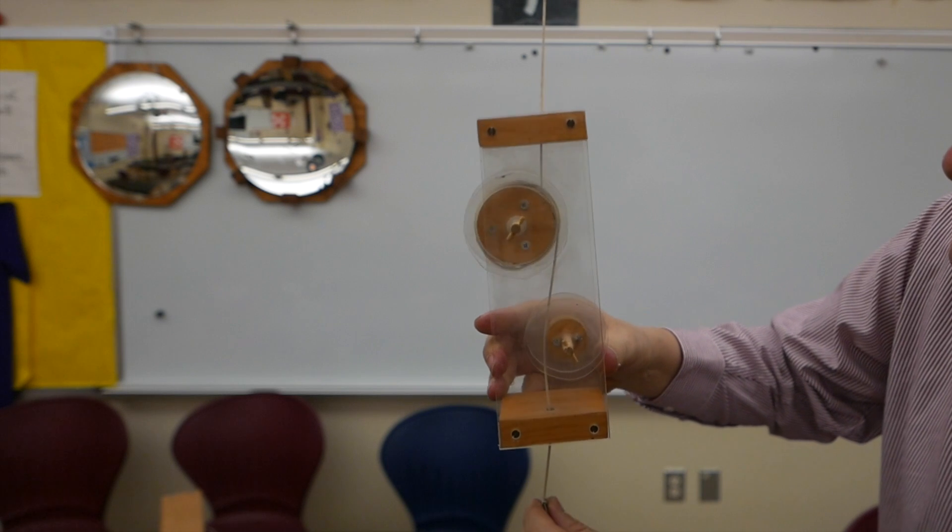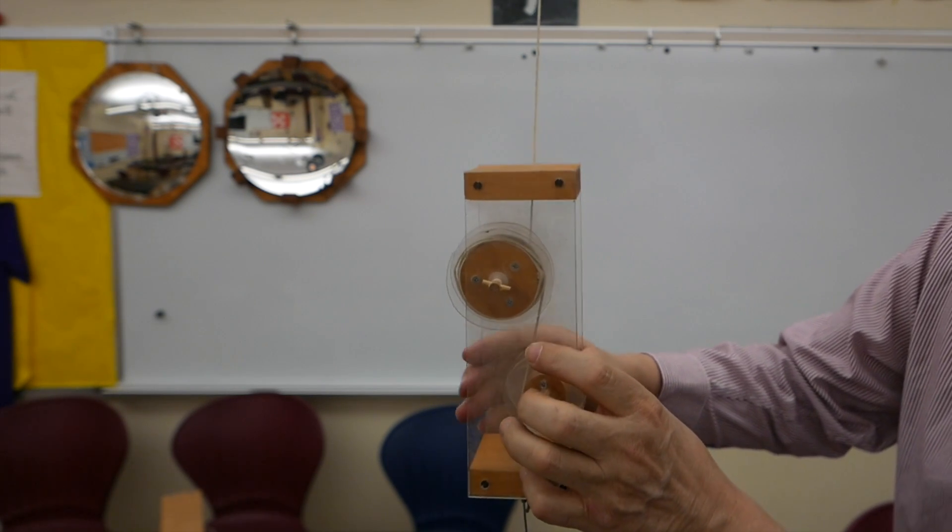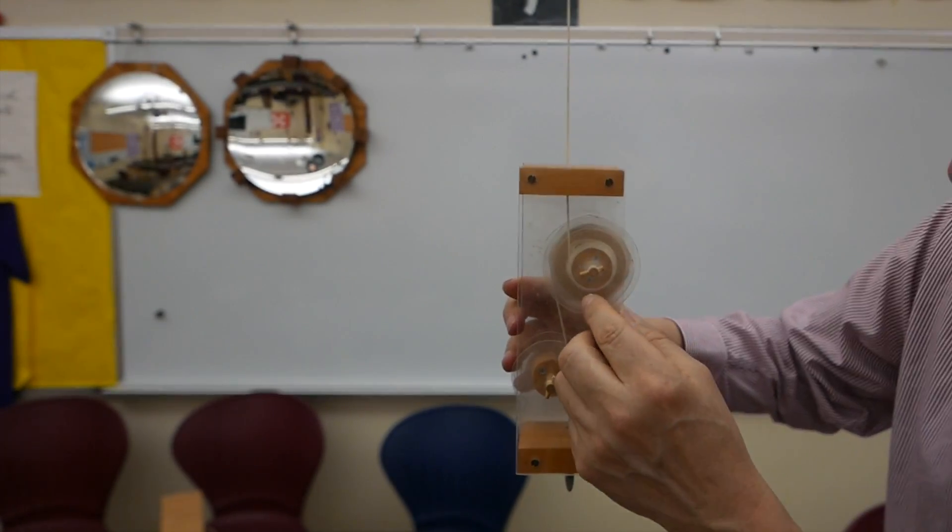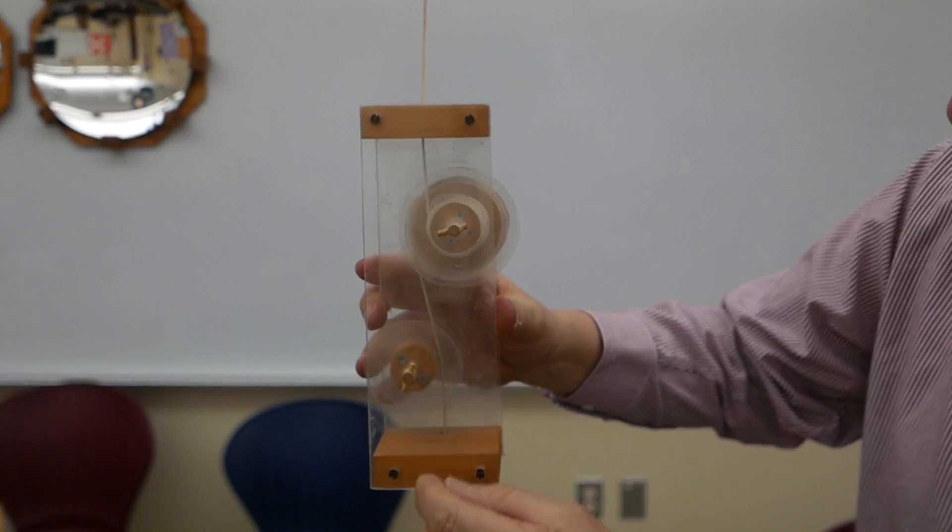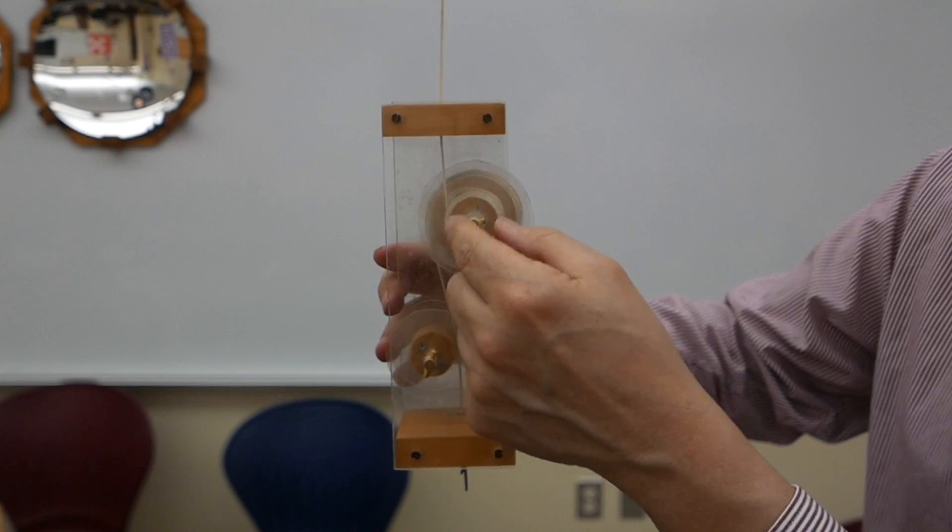When I pull down on the string, it's forcing the wheel to turn in this direction, which on the opposite side, for the string that goes upwards, when the string on the opposite side is unwinding, the string on the smaller wheel is actually winding up, and that's going to apply a force to pull the box upwards.